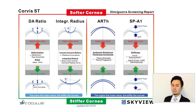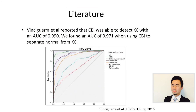This figure shows the four parameters incorporated into the CBI: DA ratio, integrated radius, ARTh, and SP-A1. Higher indexes for the first two indicate a softer cornea, and lower indexes for ARTh and SP-A1 also indicate a softer cornea. In the literature, the Vinciguerra group reported that CBI can detect keratoconus with an AUC of 0.990. In our study, we also found a very high AUC of 0.971 when using CBI in differentiating normal from keratoconus.